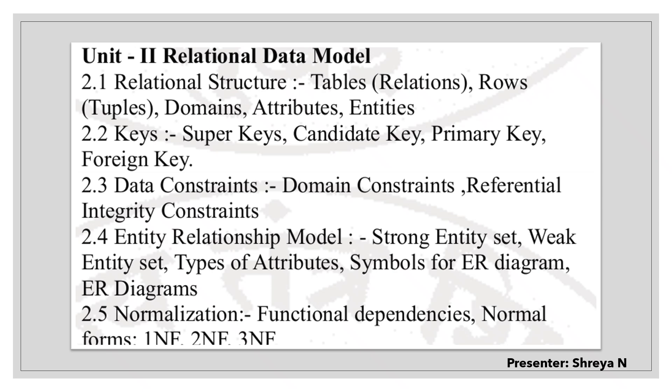Unit 2.1 is Relational Structure, which covers all the basic concepts related to the relational database: tables, rows, domains, attributes, and entities. 2.2 covers all the keys you can apply on a table. 2.3 is data constraints — the rules or restrictions you can put on data. Then we have the Entity-Relationship model, ER diagrams, weak entity sets, strong entity sets, and symbols for ER diagrams. 2.5 is normalization: dependencies between data and 1NF, 2NF, 3NF. Today we focus on 2.1, the relational structure.